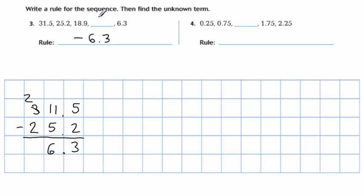Now, to find the missing number, we're going to take the number that precedes the blank, apply the rule, and it will tell us what the missing number is. So the number that precedes our missing number is 18.9. And if we apply the rule, which is subtract 6.3, we're going to find out what that missing number is.